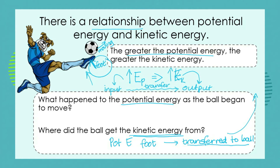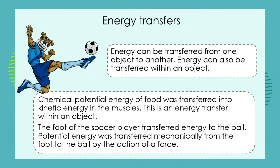Learn to look at a system, see where the input is, what the transfer is, and what the output is. The input is going to be potential energy, there's a transfer, and we see some kind of kinetic output. Energy can be transferred from one object to another — from the foot to the ball in this example — but energy can also be transferred within an object.